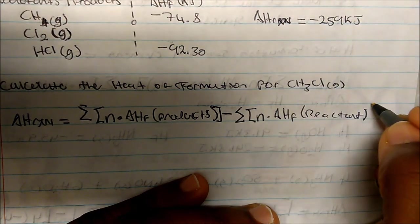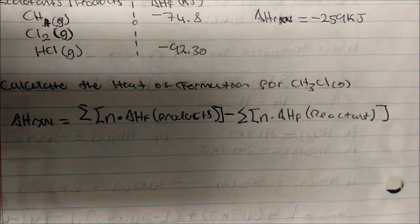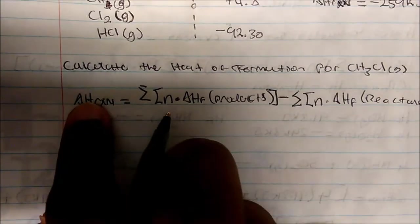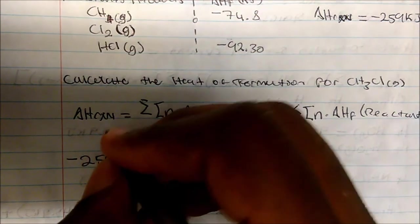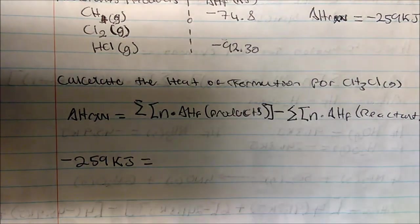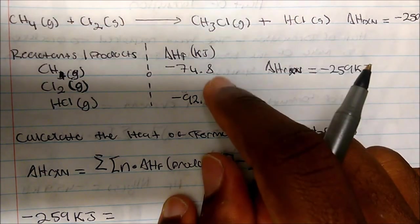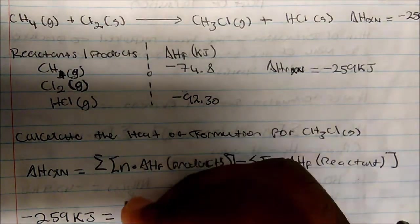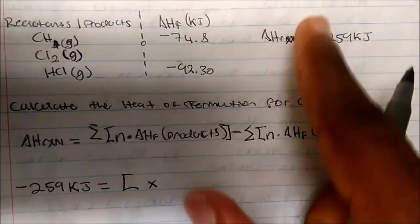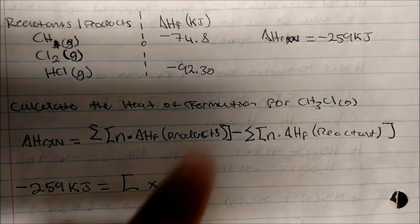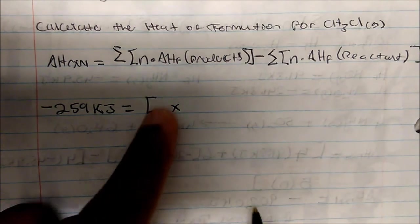The summation means it's everything. The overall heat of formation is given as negative 59.0 kilojoules. We don't know the heat of formation of methyl chloride, so let's call that X. It's 1 mole of methyl chloride, so this is just X.